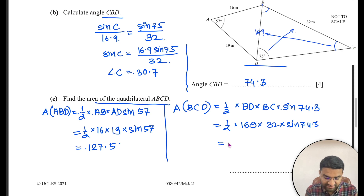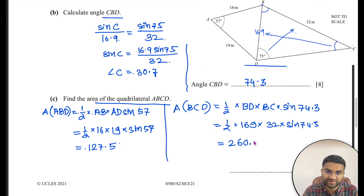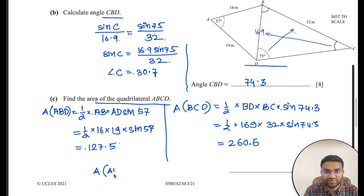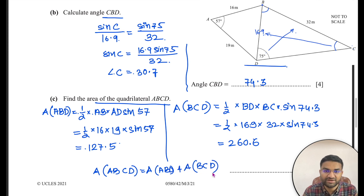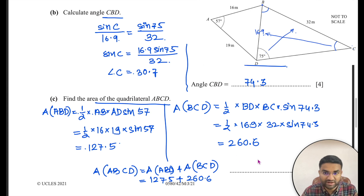Calculating: ½ × 16.9 × 32 × sin 74.3° ≈ 260.6. Area of quadrilateral ABCD = area of triangle ABD + area of triangle BCD = 127.5 + 260.6 = 388.1 square metres.